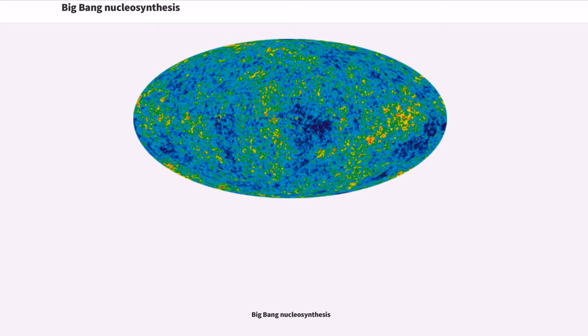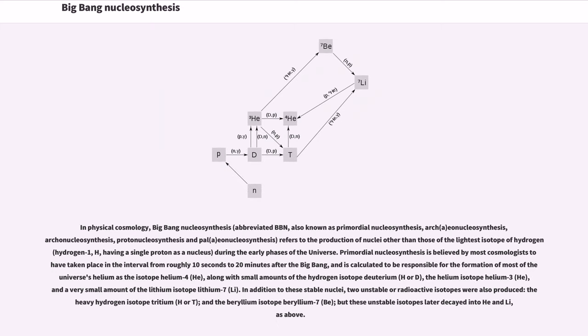Big Bang Nucleosynthesis. In physical cosmology, Big Bang nucleosynthesis, also known as primordial nucleosynthesis, archeonucleosynthesis, protonucleosynthesis, and paleonucleosynthesis, refers to the production of nuclei other than those of the lightest isotope of hydrogen during the early phases of the universe.